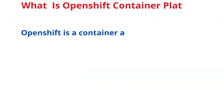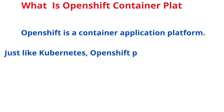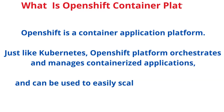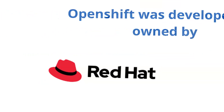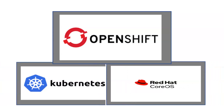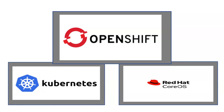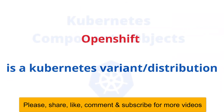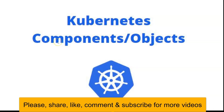OpenShift is a container application platform — just like Kubernetes, OpenShift orchestrates and manages containerized applications and can be used to easily scale up applications as required. OpenShift was developed by Red Hat. The OpenShift cluster is built on top of the Kubernetes cluster and the Red Hat Core Operating System. It is compatible with Kubernetes and can be managed with Kubernetes tools, but this time using OpenShift management tools. So permit me to say that OpenShift is just like a distribution of Kubernetes.